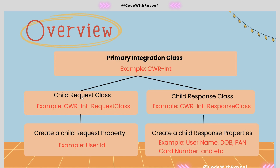In whatever class context we created, we now need to create a child request property — just a single value property, not a page property. For example, I am creating a 'UserID' property here for reference. Similarly, in the response class, we need to create child response properties such as username, date of birth, card number, account number, etc. So whenever a user fetches data using the UserID, those are the response properties that will be returned.